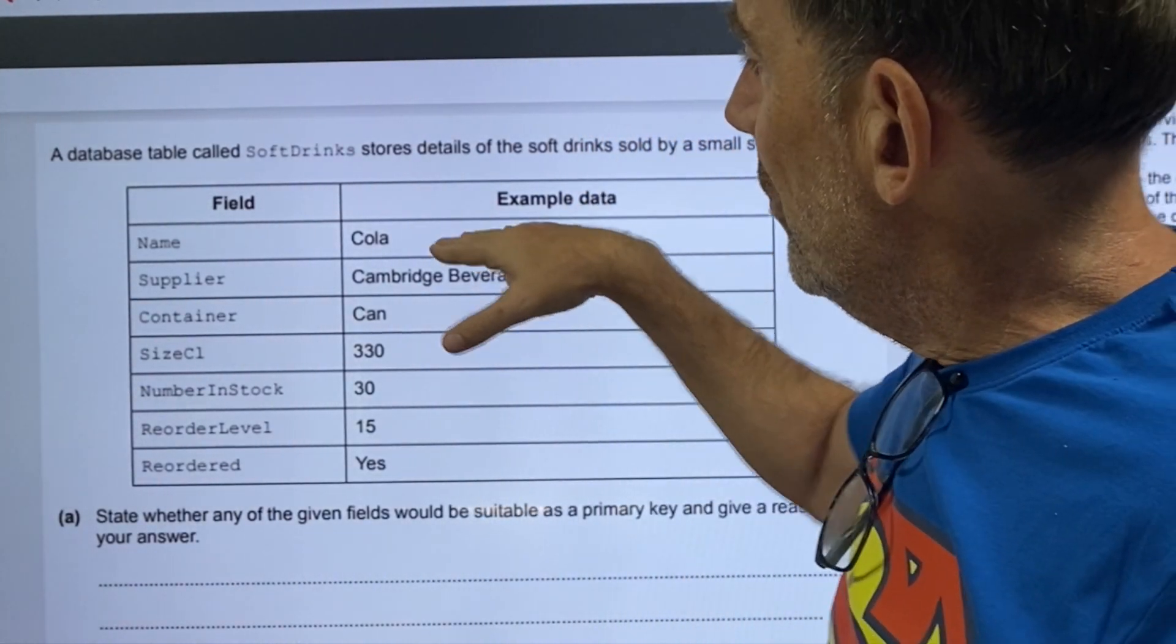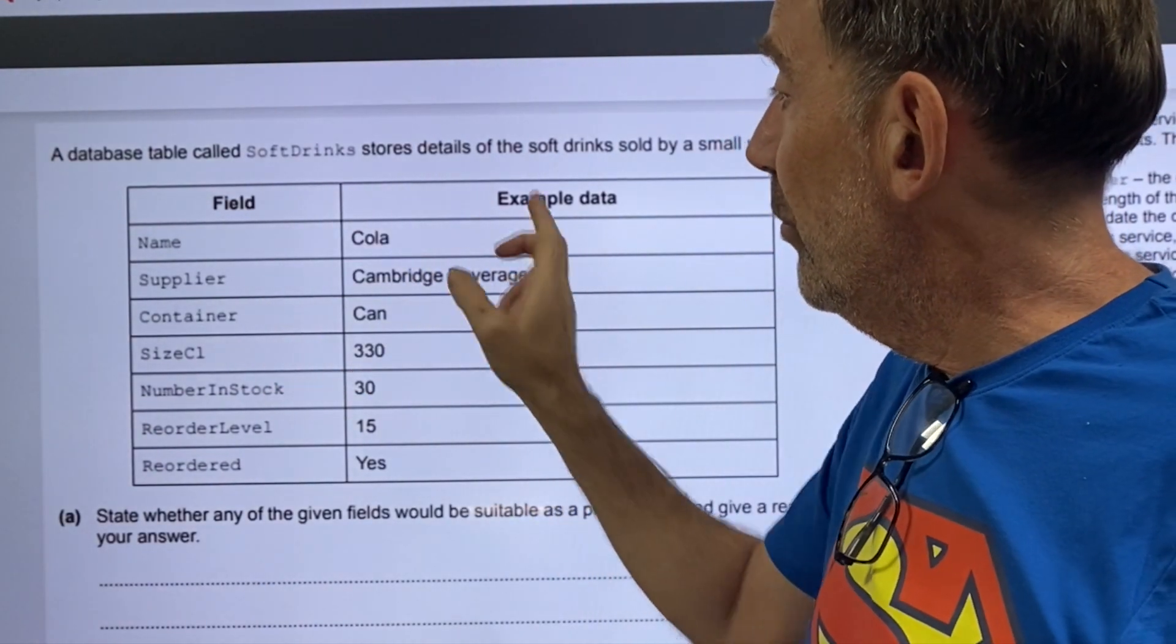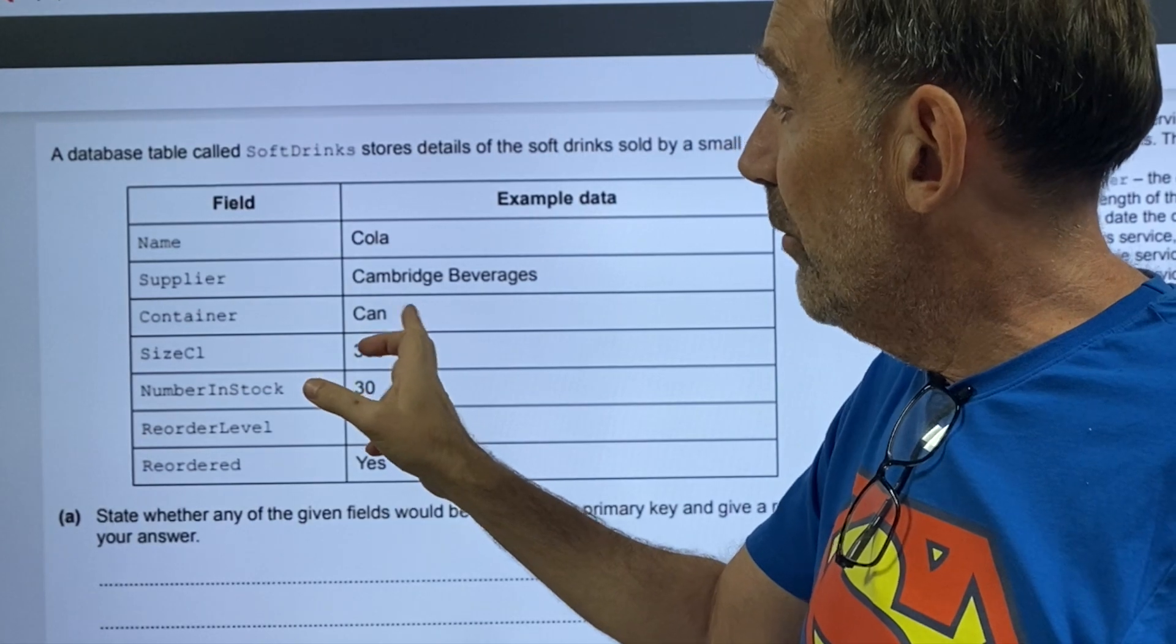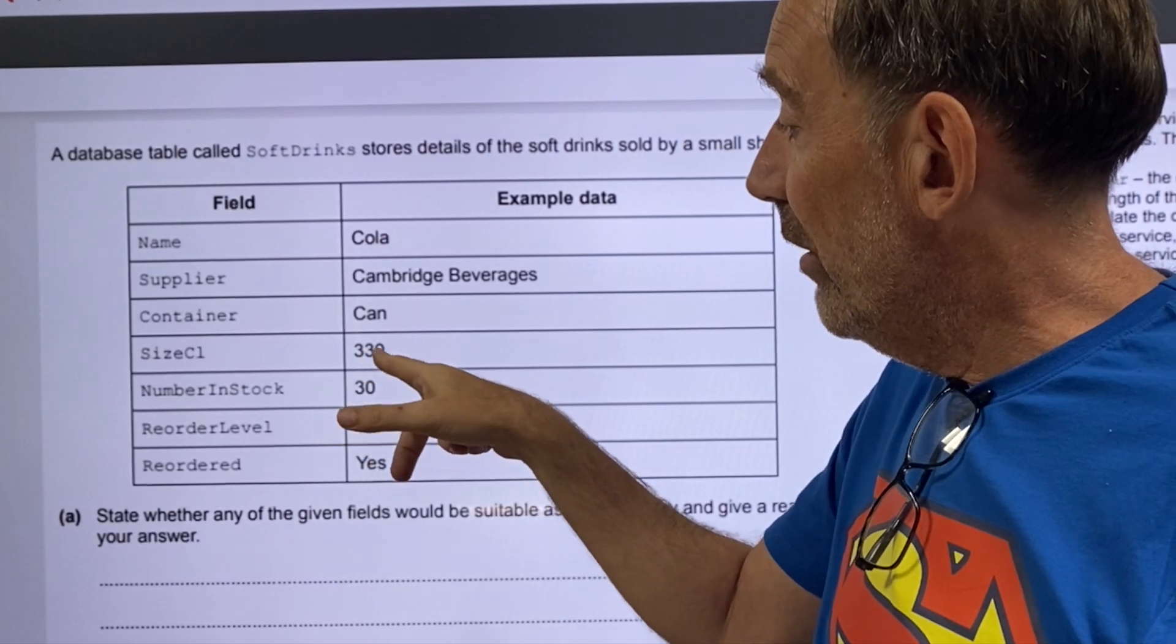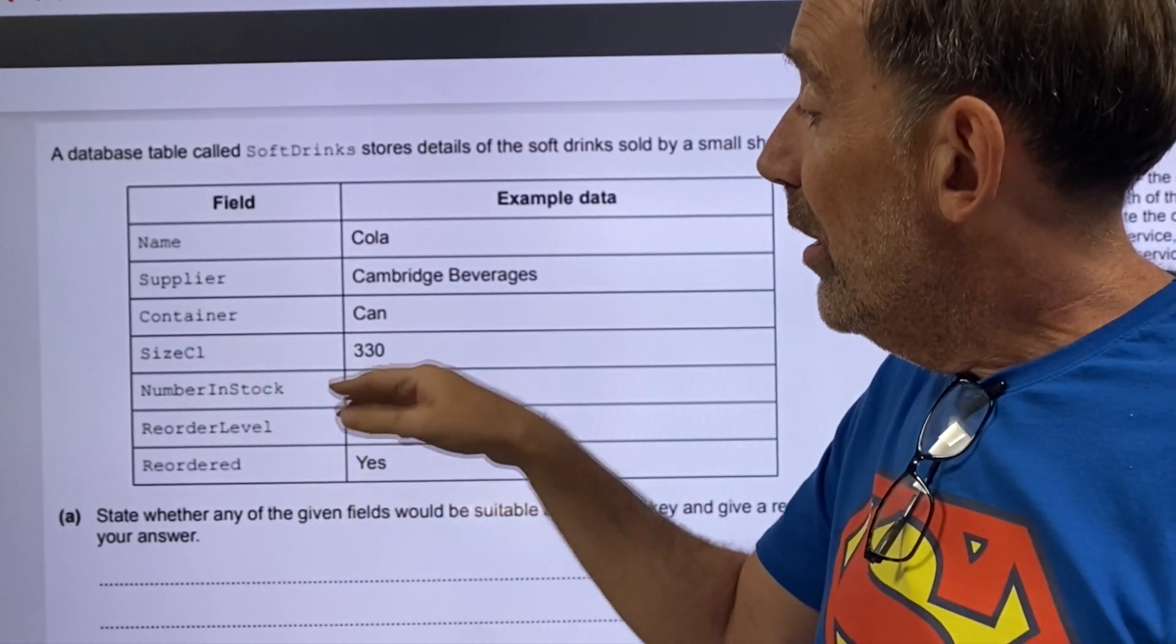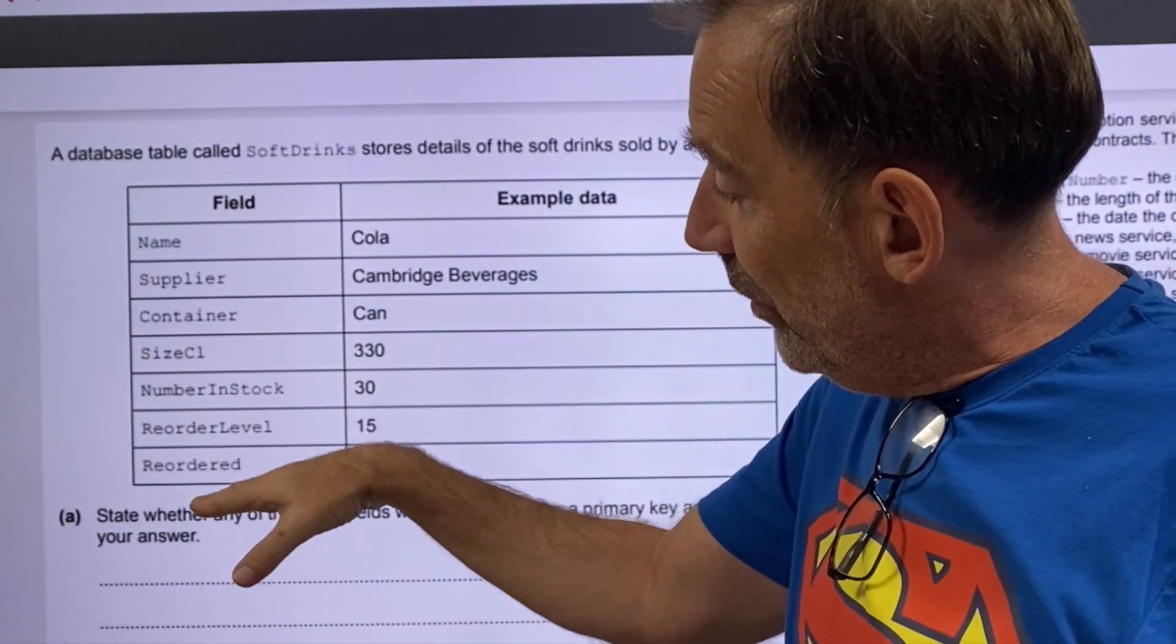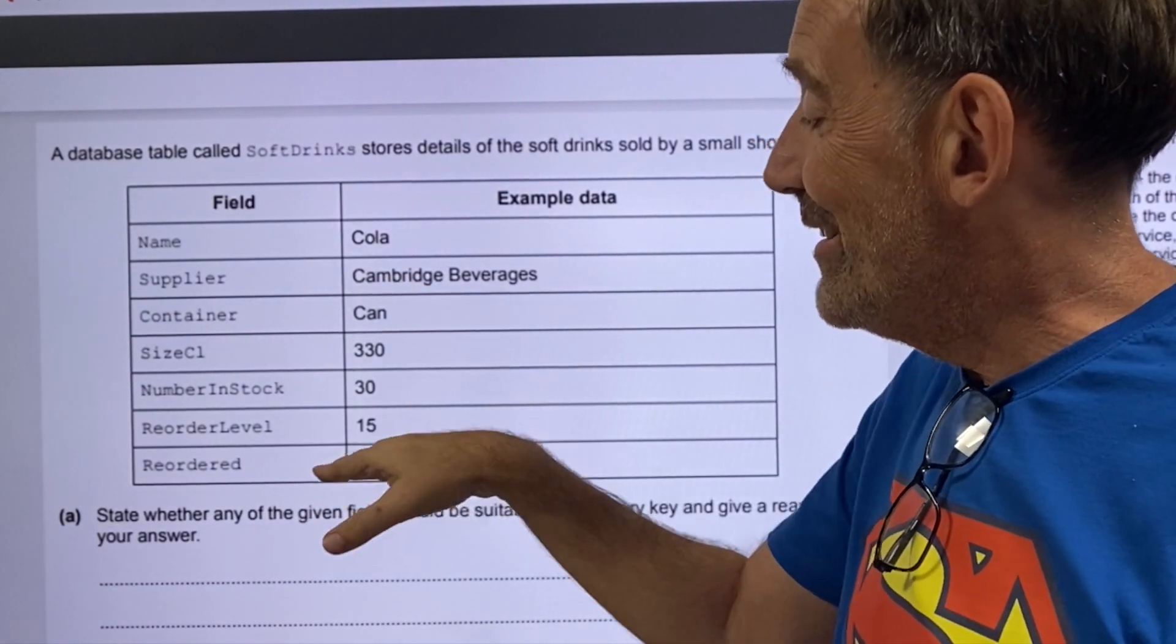Example data could include cola as the name of the soft drink, supplier who supplied the cola drink, whether it comes in a can or a bottle, how big that particular can is, 30 centiliters, how many they've got in stock, what would be the reorder level when the stock gets down to 15, then the reorder. Has cola been reordered? Yes, it has.